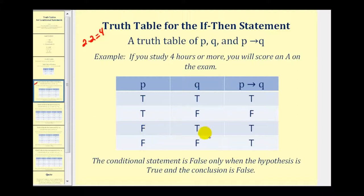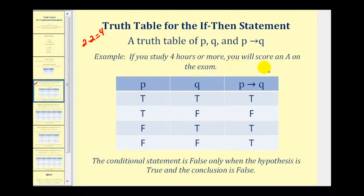When p is false and q is true, that means you don't study four or more hours and you still score an A on the exam. As soon as you know you don't study four or more hours, this is not in violation of the agreement the instructor made, and therefore it's true. The same applies when p is false and q is false — you don't study four or more hours and you don't score an A. The instructor only made an agreement if you study four or more hours, so it's not in violation of the agreement, and therefore is true.